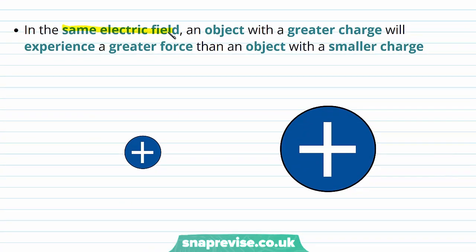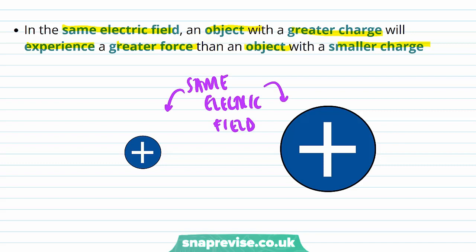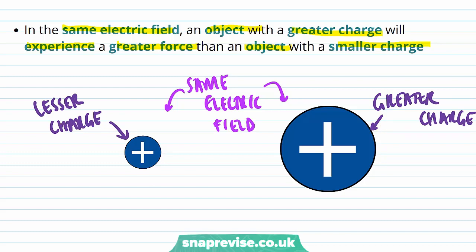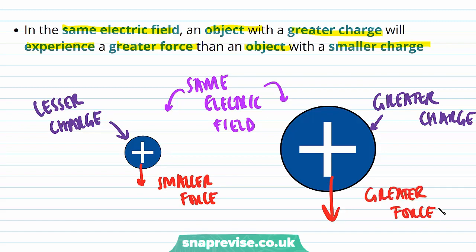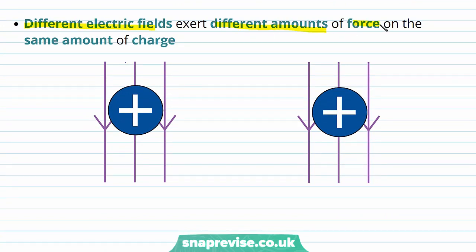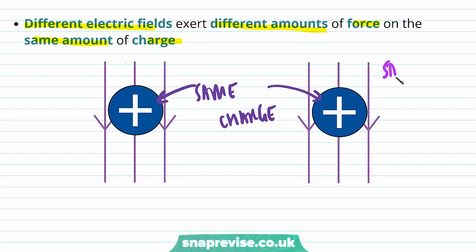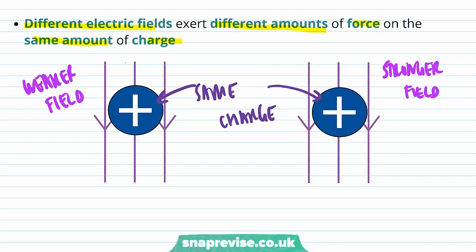In the same electric field, an object with a greater charge will experience a greater force than an object with a smaller charge. So if we imagine two objects in the same electric field, one with a greater charge and one with a lesser charge, the lesser charge has a smaller force on it, whereas the greater charge has a greater force on it. Different electric fields exert different amounts of force on the same amount of charge. A stronger field will exert a stronger force, while a weaker field will exert less force on the charge.